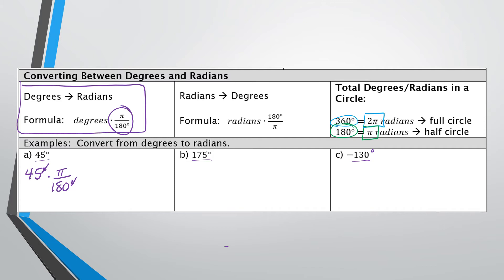All we have to do is reduce. Multiplying straight across gives us 45π over 180. We can reduce 45 over 180: both divide by 45, so 45÷45 = 1 (we don't write the 1), and 180÷45 = 4. So our final answer is π over 4.